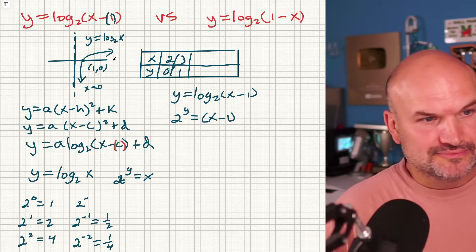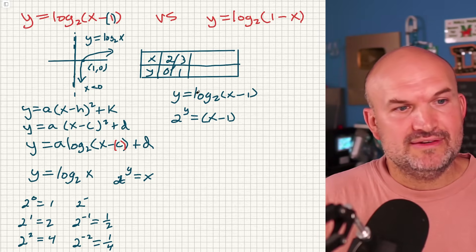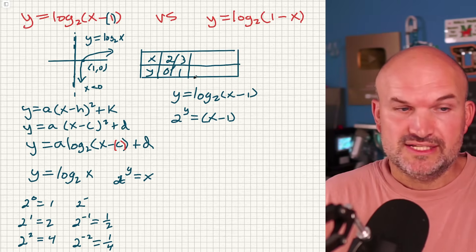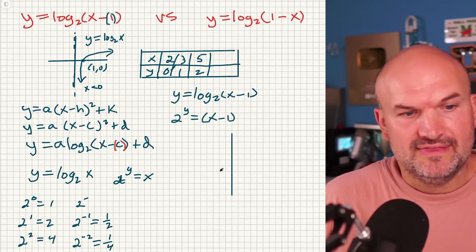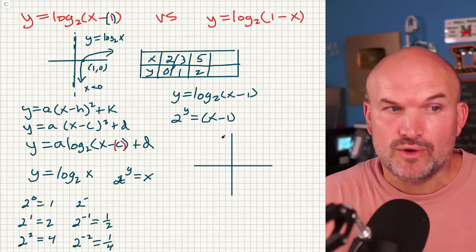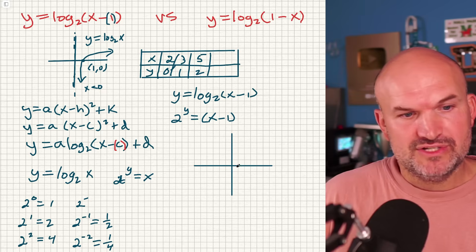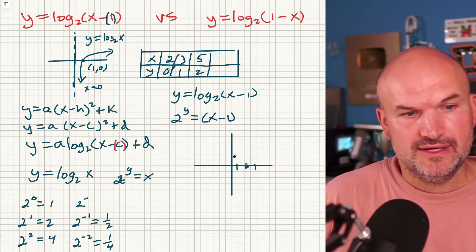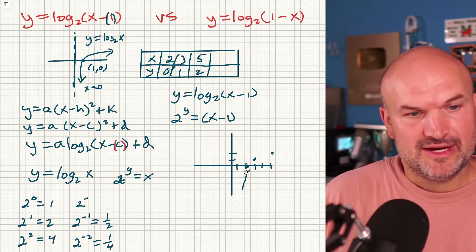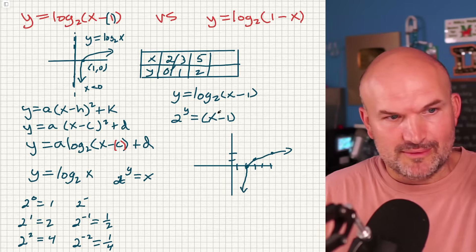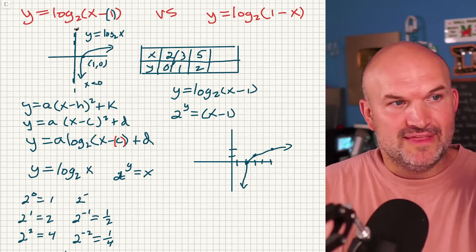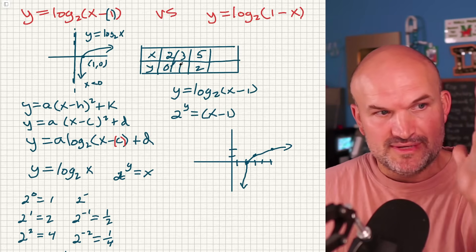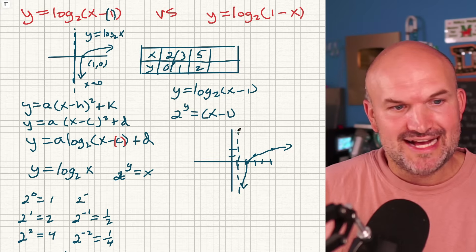Now let's plot these three points to confirm the transformation. I have (2, 0) as my x-intercept, (3, 1), and (5, 2). You can see the graph, and you could use smaller numbers going into fractions, but that's a lot more difficult to graph. This confirms that the vertical asymptote, which was at x equals 0 for the parent function, is now being shifted one unit to the right — that's why transformations are so helpful.